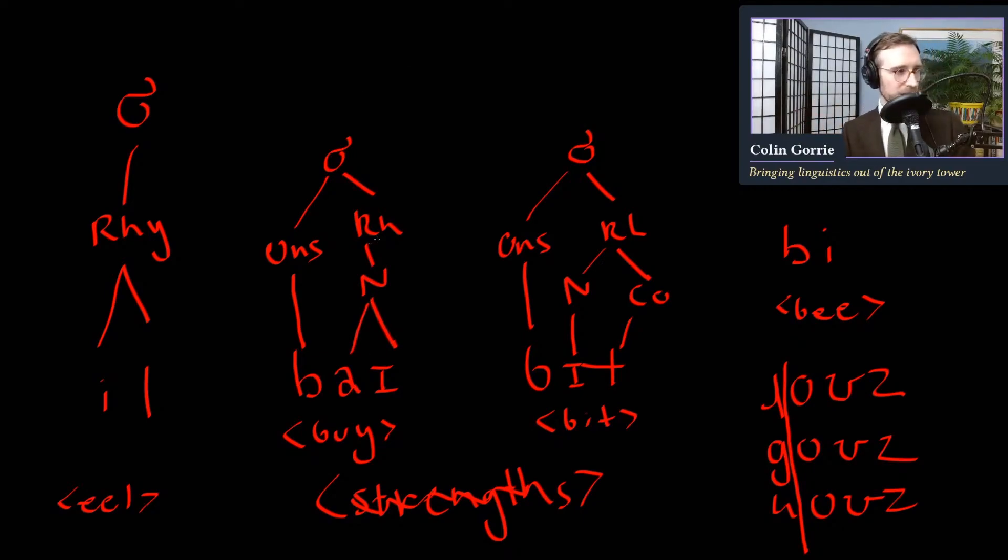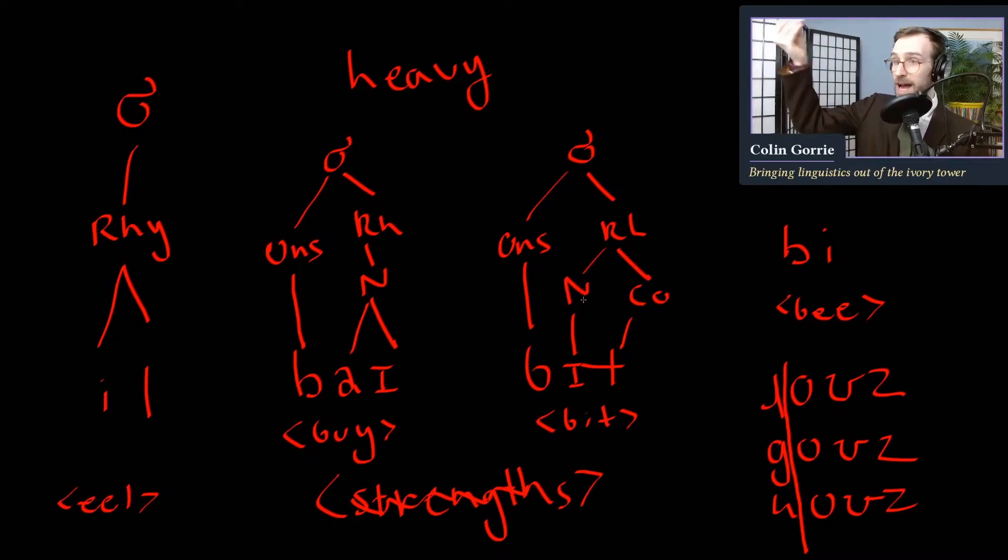The rhyme is I in the case of by and it in the case of bit. In the case of bit, we have a branching below the rhyme into nucleus and coda. The nucleus is I, the coda is T. So we have a closed syllable. So in by, we have a diphthong and we have no coda because the sonority peak is the whole diphthong I. So we have a nucleus only, but the nucleus itself branches. So this nucleus, this node in our tree here, this node in our tree dominates two segments, I.